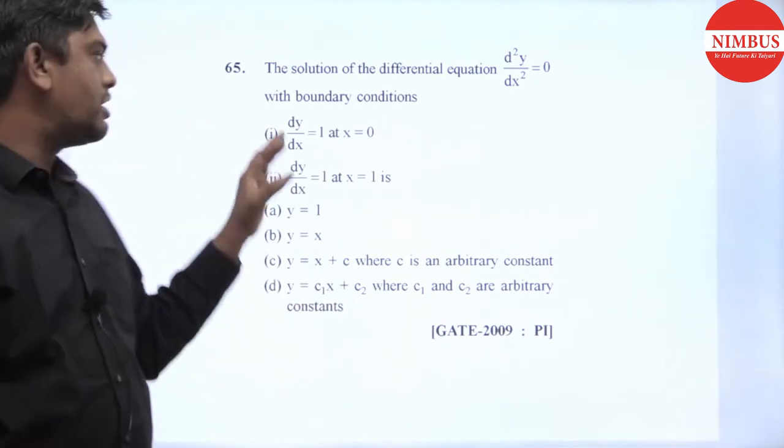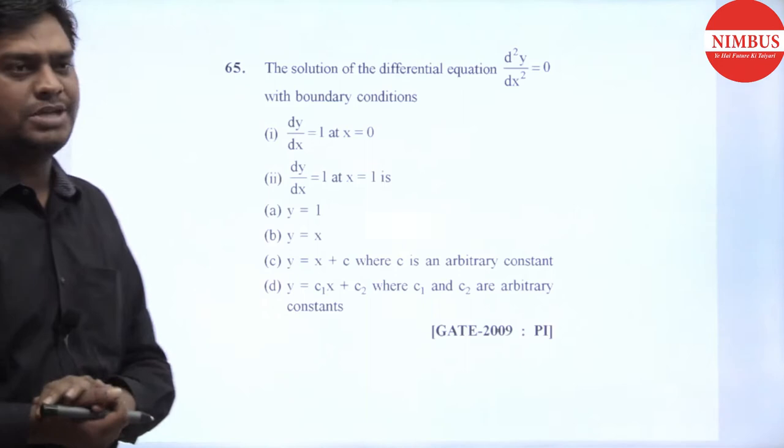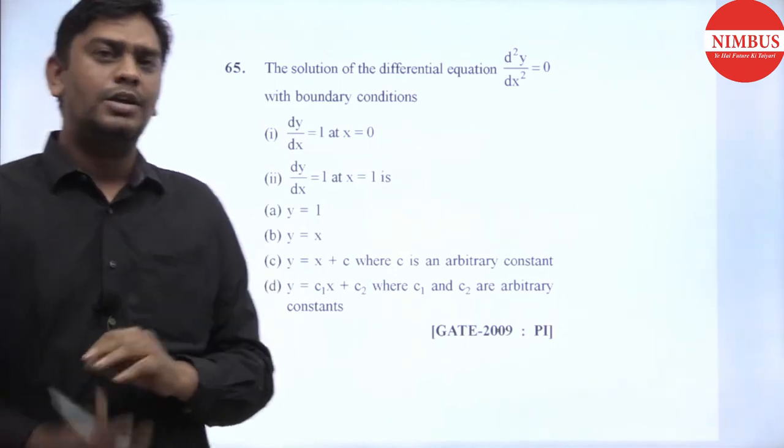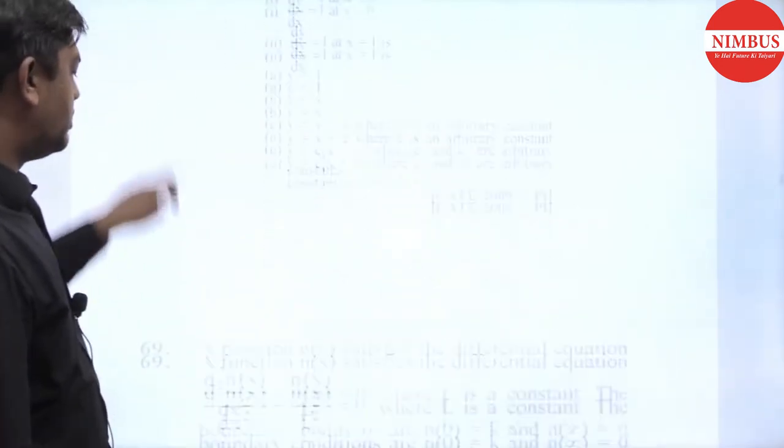So I have asked that with these two boundary conditions we have a solution. This is a very simple question, but students have doubts about this so I will explain it. So this is d²y/dx² = 0.